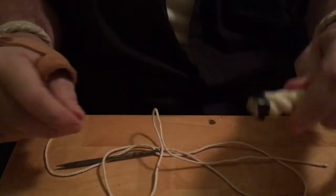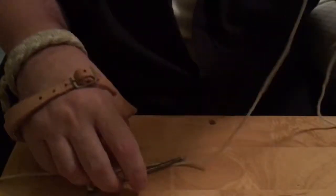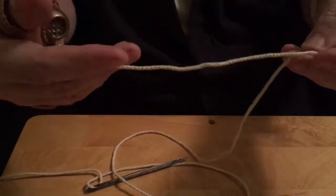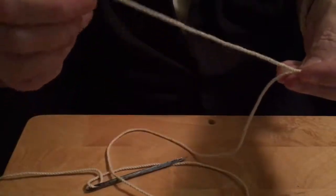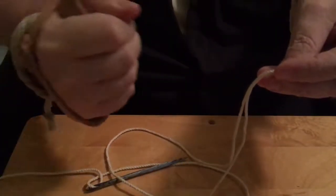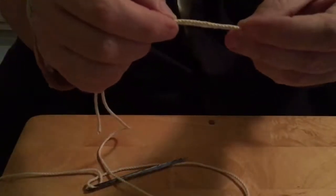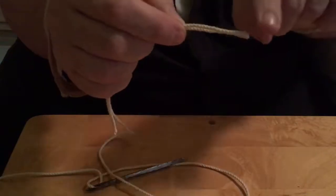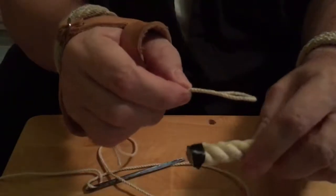I'm gonna work in my left hand. I'm gonna take my whipping twine and make a small bite with enough tail that I can pull through at the end. So I'm gonna take about this much so I have enough tail that I can pull the needle through at the end, and I'm gonna pinch it.